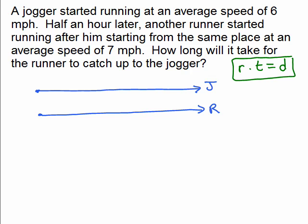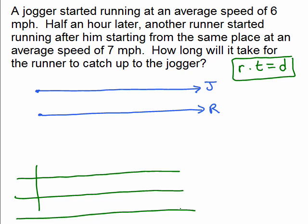And now we want to define some variables. So I'm going to do a chart. And we have a jogger and a runner. And we have to put something in for the rate, something in for the time. And we know distance we get from doing rate times time. Rate times time equals distance.